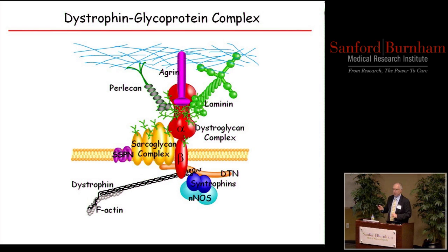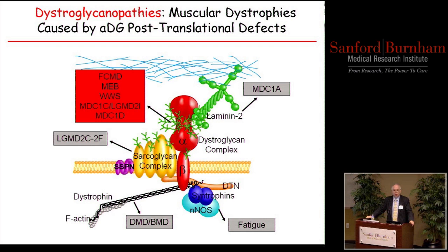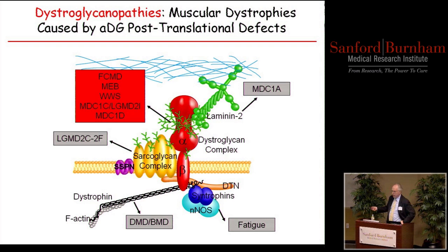From this biochemical characterization, one function of this complex is to link the basement membrane surrounding each muscle cell to the underlying cytoskeleton. When you have defects in this complex, you disrupt that linkage. We knew this complex was involved in Duchenne and Becker muscular dystrophy. Then, as other labs characterized the entire complex, we found that mutations in the sarcoglycans lead to limb girdle muscular dystrophy subtypes 2C to 2F. Mutations in laminin-2 lead to congenital muscular dystrophies. Absence of nNOS leads to muscle fatigue.